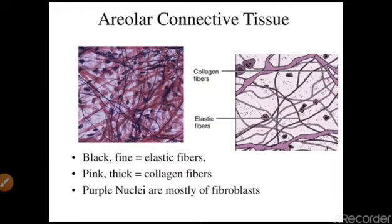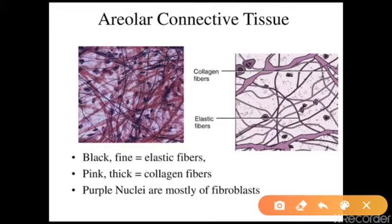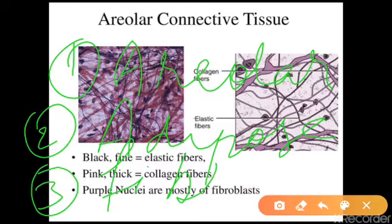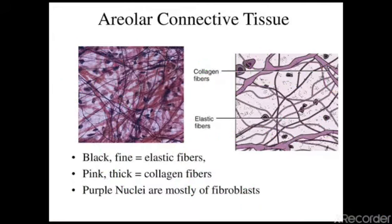Connective tissue proper contains a combination of fibers and matrix. It is mainly divided into three types: the first is areolar tissue, the second is adipose tissue, and the third is fibrous tissue. We are going to start by reading about areolar connective tissue.